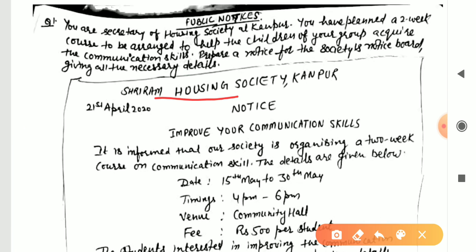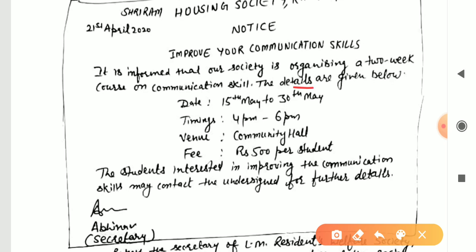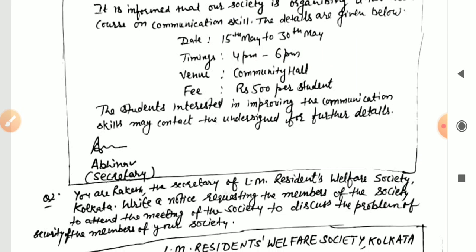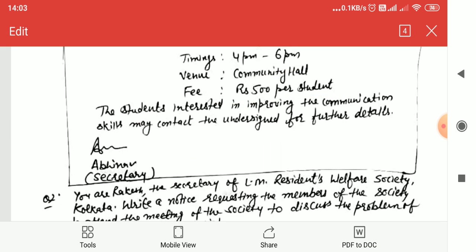Write the society name — for example, Sriram Housing Society, Kanpur — then 'Notice,' then the title 'Improve Your Communication Skill,' and the date on the left. Start: 'It is informed that our society is going to organize a two-week course on communication skills.' Then give details below: duration — two weeks or 15 days; timings — 4 PM to 6 PM (after school hours); venue — community hall of the society; fees — rupees 500 per student. Students interested may contact the undersigned. Add signature, name, and designation as 'Secretary.'